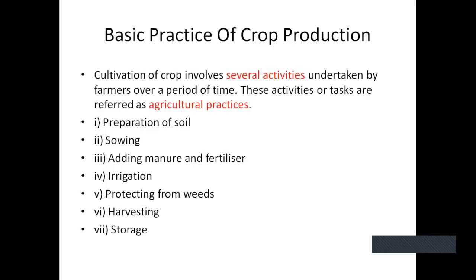Are you getting what I am saying? So the different tasks or activities that the farmer does in his field so that he gets a bumper crop — these are called agriculture practices. There are altogether seven different steps the farmer has to do these activities so that he gets a proper yield. We are going to study all these seven activities or practices in this chapter, and I will explain them one by one.